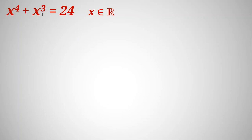We have x to the 4 plus x cubed equal to 24, and x is a real number. We want to find all possible real values of x. The degree is 4, so one way is to try to find at least two roots.